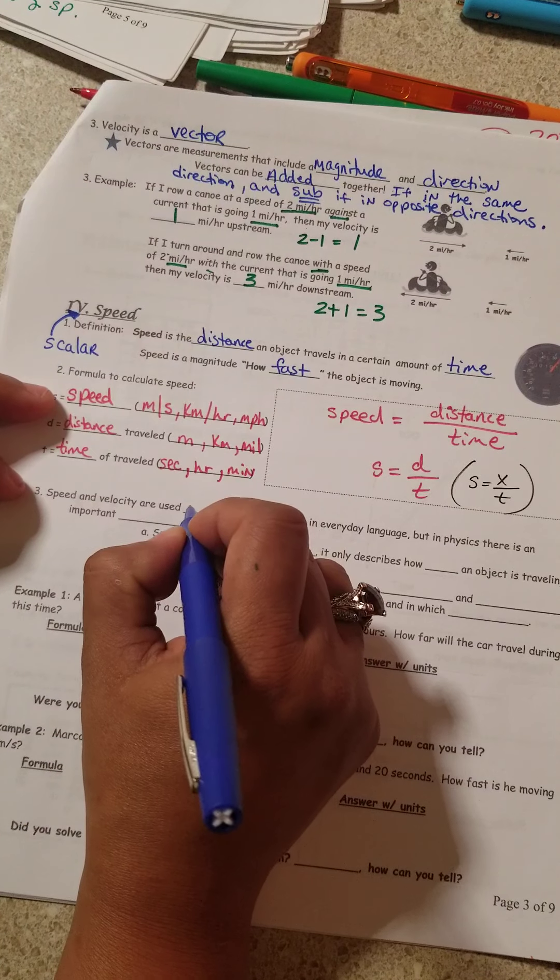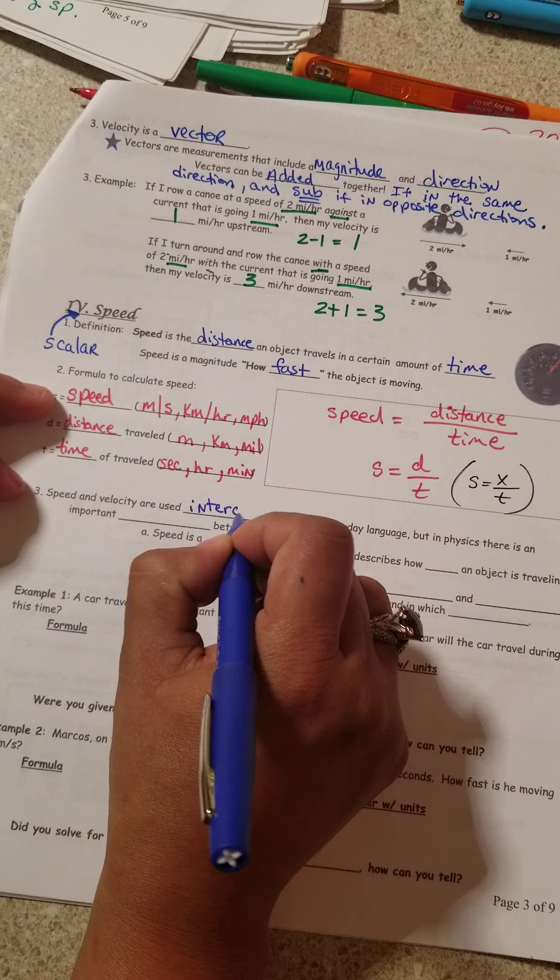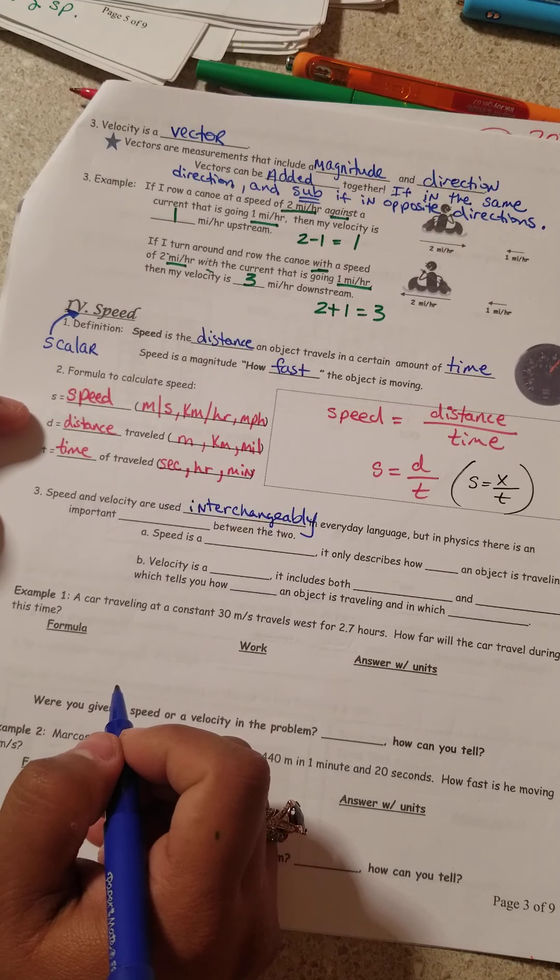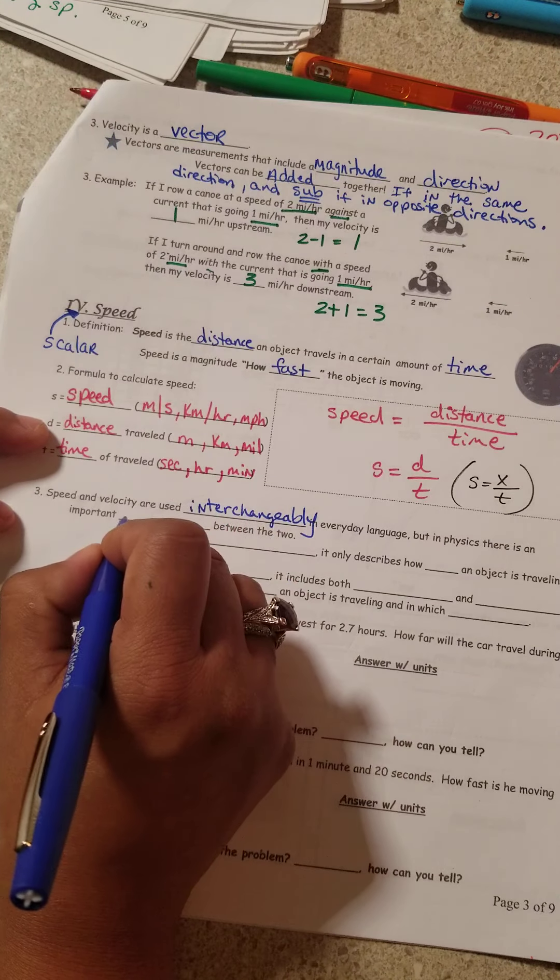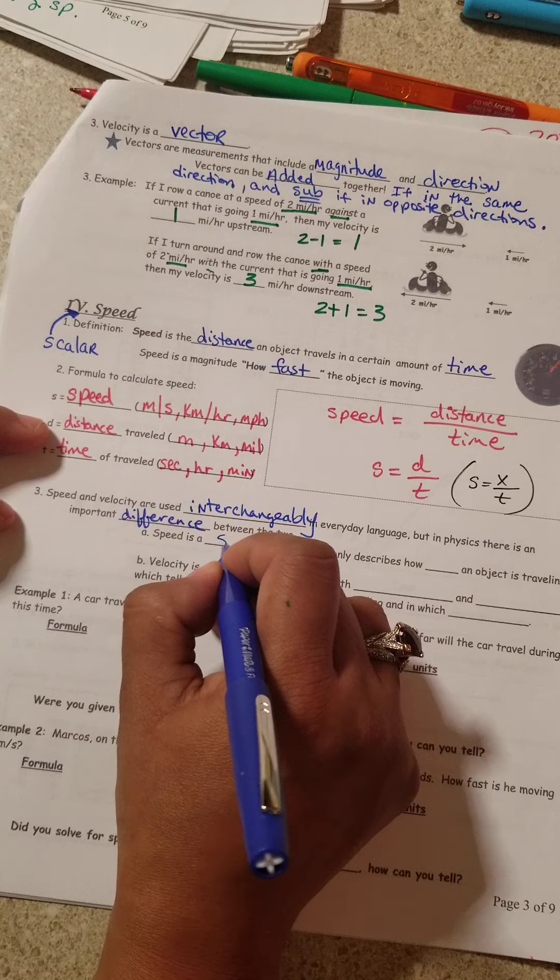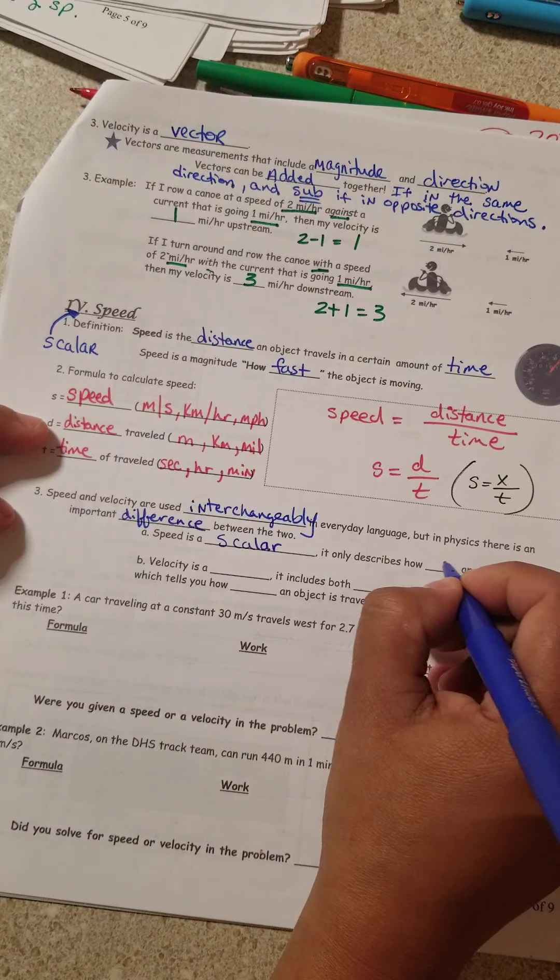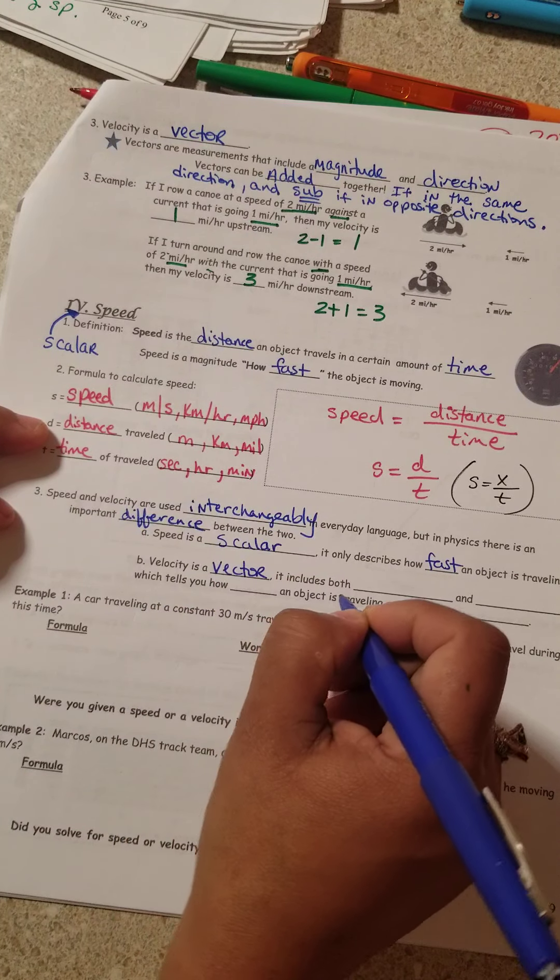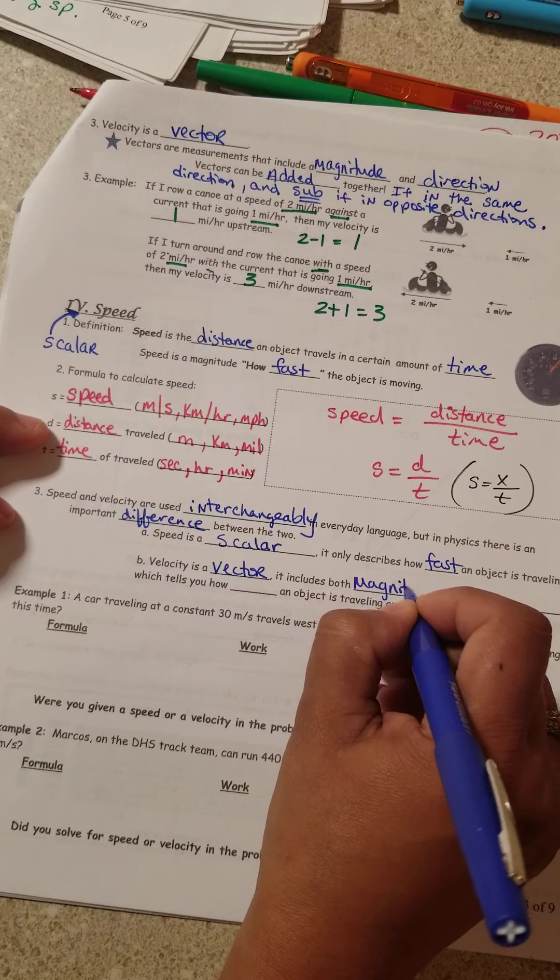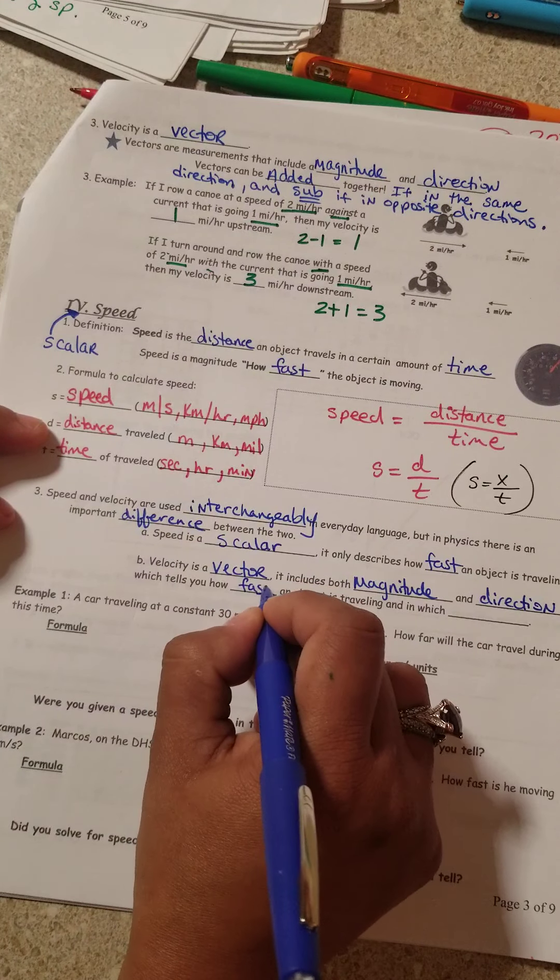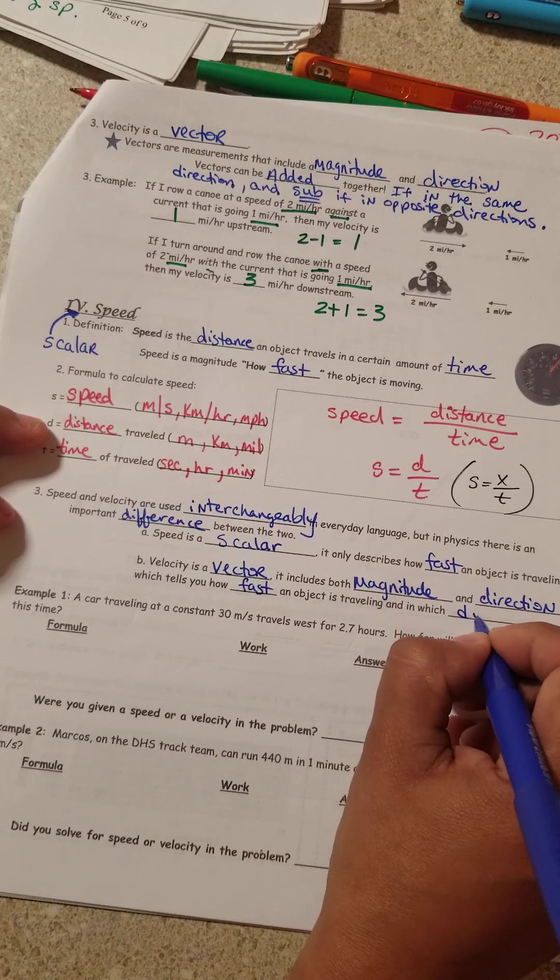You ready? Let's keep going. Speed and velocity. Speed and velocity are used interchangeable in everyday language. But in physics, though, there is an important distinction or difference between the two. Speed is a scalar, and it describes only how fast an object is traveling, but velocity is a vector, and it includes both magnitude and direction. It tells you not only how fast an object is traveling, but it also tells you the direction it's going.